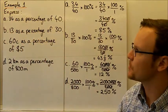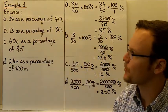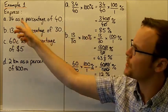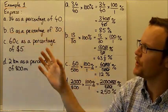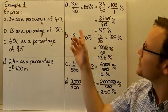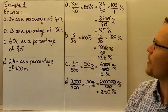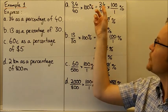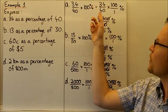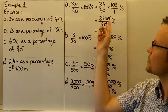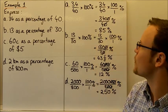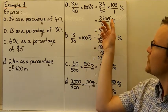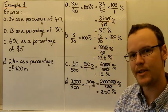If we have a look at some examples now, we're expressing some different amounts as percentages. So firstly we've got 34 as a percentage of 40, so 34 is the part with 40 being the whole. So 34 over 40 multiplied by 100%, that's going to be 34 times 100 multiplied together on the top there and 40 times 1. So 3,400 divided by 40.